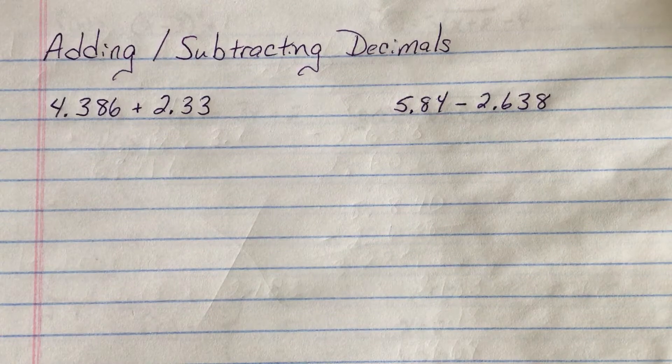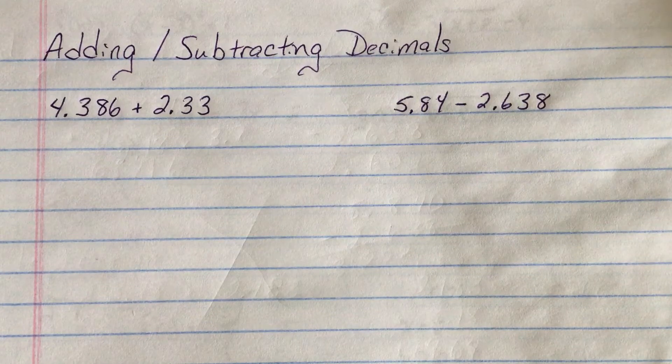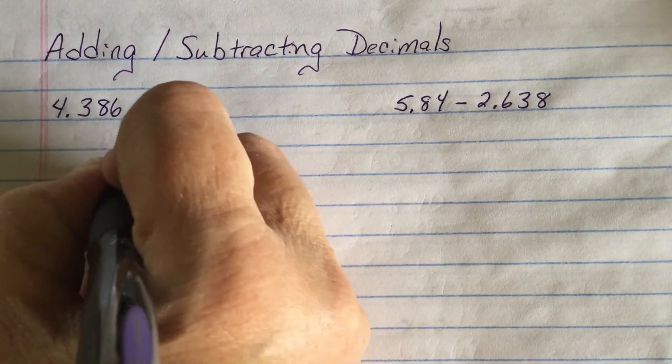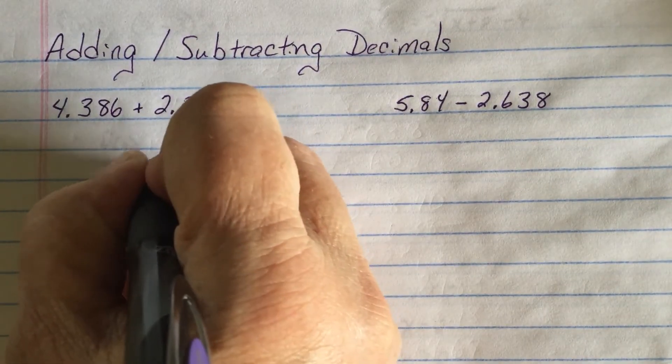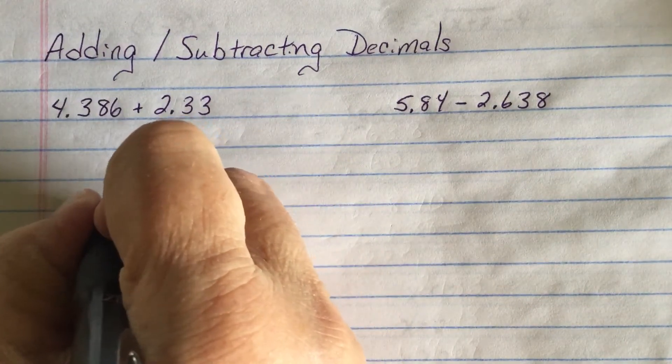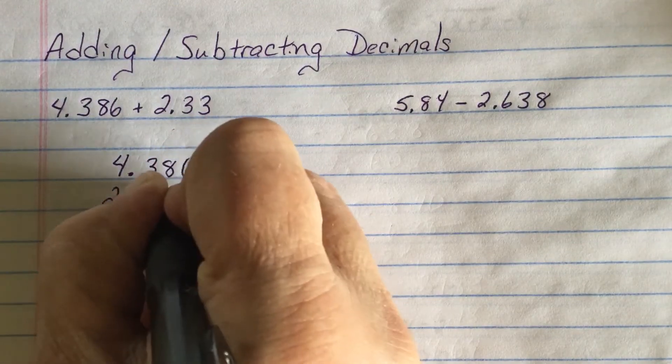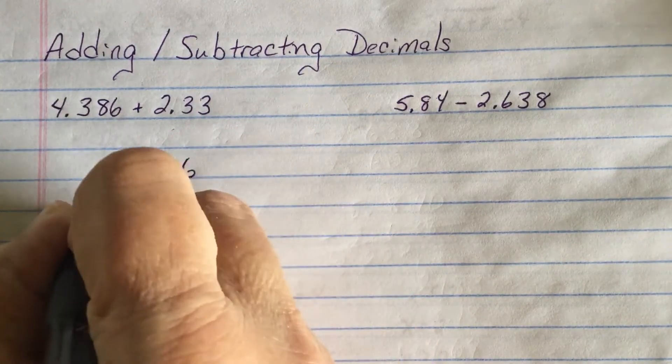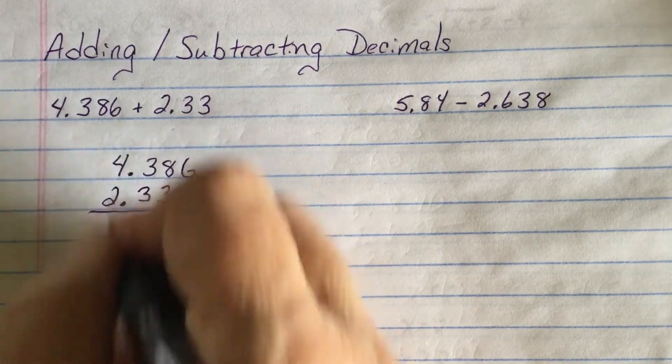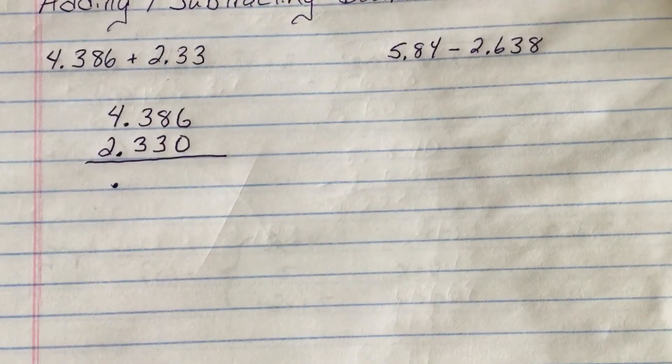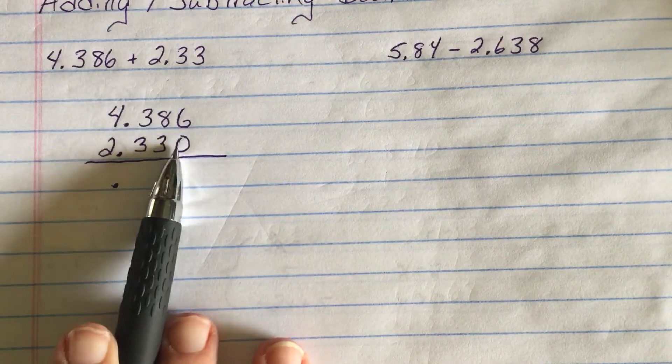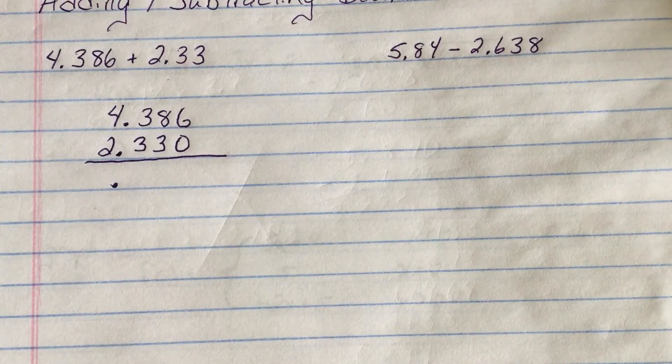That's the biggest mistake students make. They try lining everything up off the right, they think it makes it look pretty. Well, we line up off of the decimal because I can make this number the same length by backfilling with a zero. We line up off of the decimal. We typically do not write this zero even though it can be there, like you see me add it in. It's called an unnecessary number.